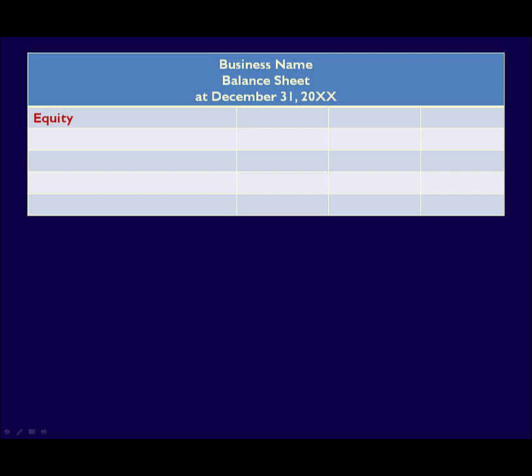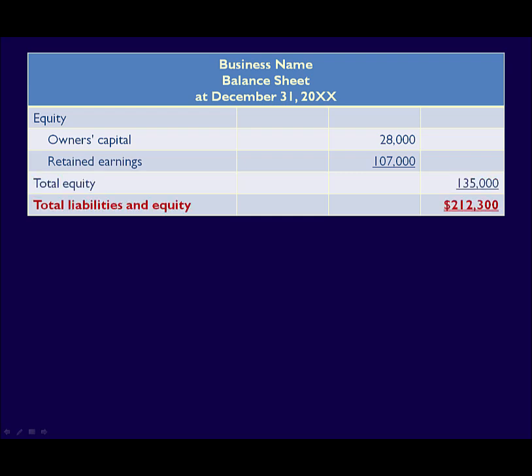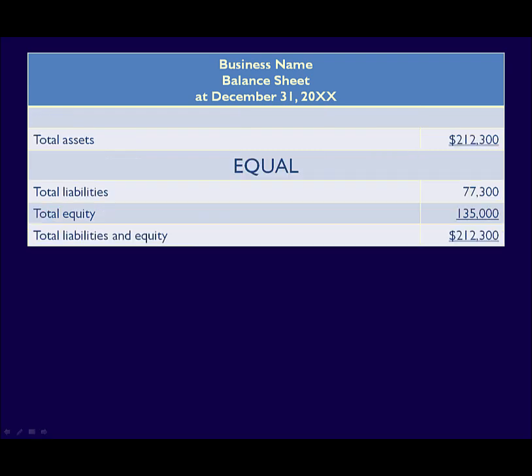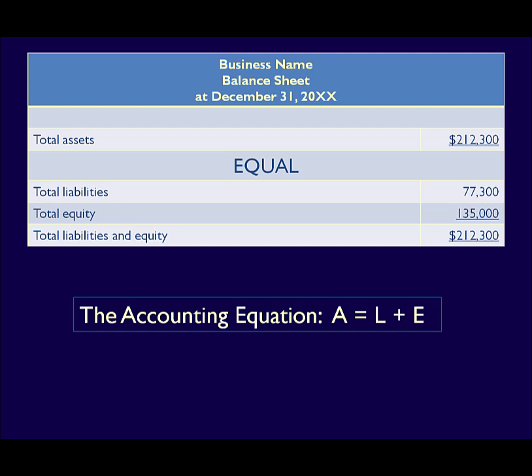Next is the equity section with the heading 'Equity.' Details of the split between owners' capital and retained earnings is provided. Note that owners' capital is always listed first, followed by retained earnings — that's because to start a business, the owners must have already contributed capital. A total equity is provided next, followed by a total of all the liabilities plus the equity, called 'total liabilities and equity.' That completes the balance sheet. Notice something very important: total assets are equal to total liabilities plus total equity. This is the accounting equation from chapter two. Economic resources — our assets — are financed either through debt, our liabilities, or equity. The accounting equation must always balance.